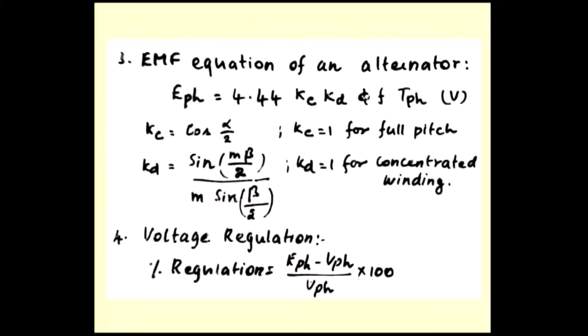Next we discussed the EMF equation: 4.44 Kc Kd phi f T phase. Kc is the coil span factor, Kd is the distribution factor. For concentrated winding, Kd equals 1. Kc equals 1 for full pitch winding.